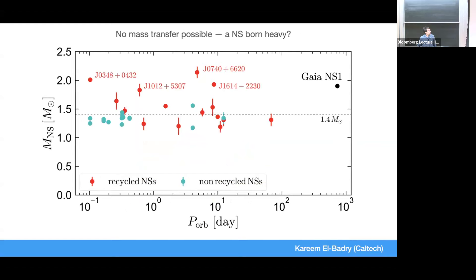Another interesting thing about this object's mass: there are other neutron stars that are this massive, but they're all recycled — they've accreted from a companion and been spun up to millisecond pulsars. This companion is a main-sequence star that definitely hasn't accreted anything. Compared to the non-recycled neutron star population, this object is more massive than any of them. So it seems like a case of a neutron star born well above 1.4 solar masses — theoretically not shocking, but based on most well-measured neutron stars, it seemed like most were born close to 1.4.